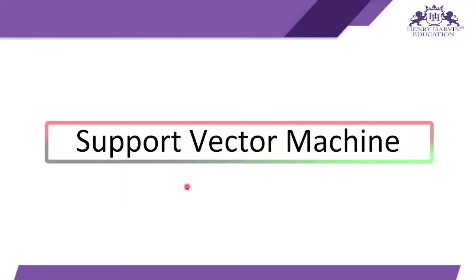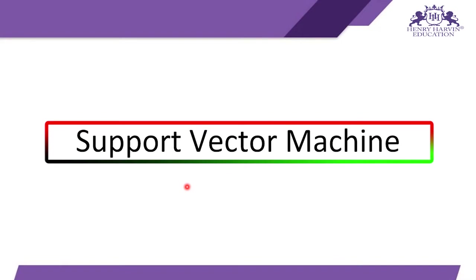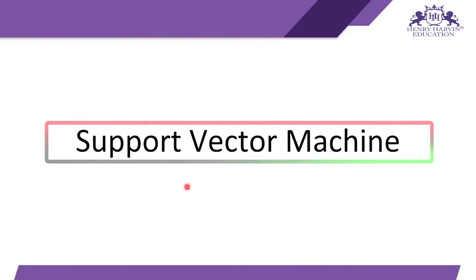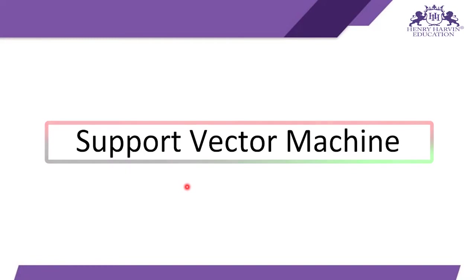In today's session we are going to talk about Support Vector Machine. SVM is a machine learning algorithm used mainly to solve classification problems, and sometimes regression problems. It is easy to implement and understand. One limitation is that it works best on datasets with 10,000 rows or fewer. For large datasets of 50,000 or 90,000 rows, SVM won't perform as well.